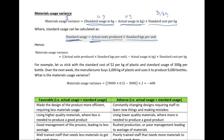If we combine the two formulas, material usage variance equals actual units produced multiplied by standard Kgs per unit (giving us standard usage), minus actual usage multiplied by the standard cost per Kg.